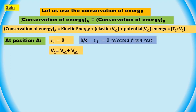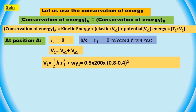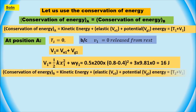In this case, the potential energy at point A is equal to half times spring constant K times displacement X squared, plus the weight of the slider times zero to the datum line, which equals 16 joules. Where K is the stiffness of the spring and X is the displacement from the unstretched length. We also know that the total mechanical energy of the system is equal to the potential energy at point A plus the kinetic energy at point B.